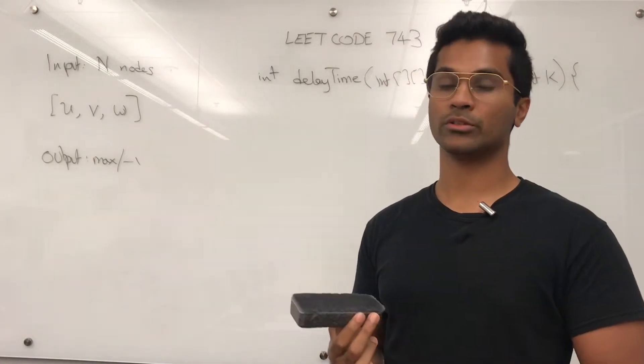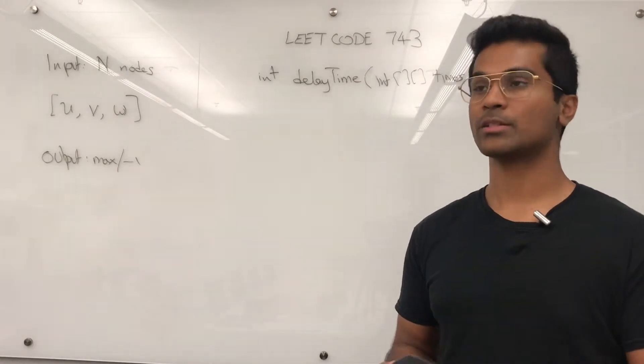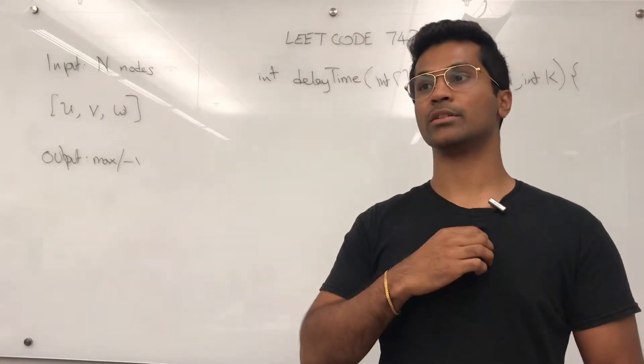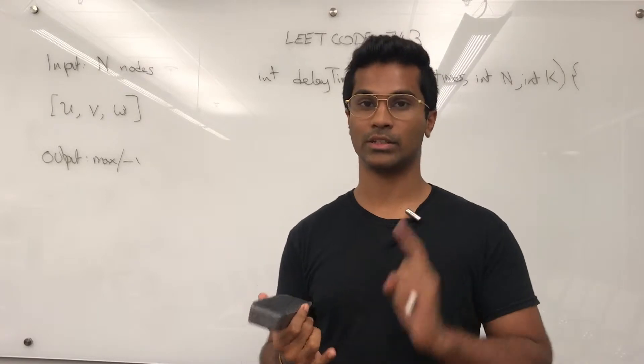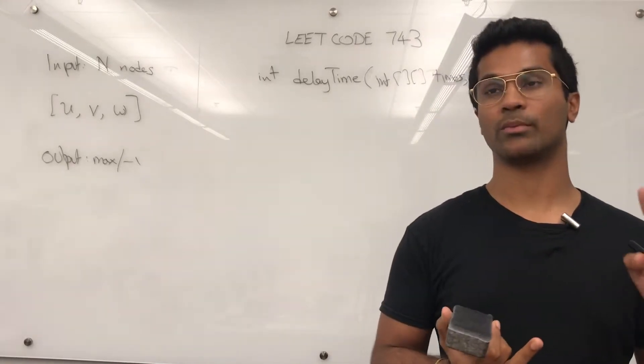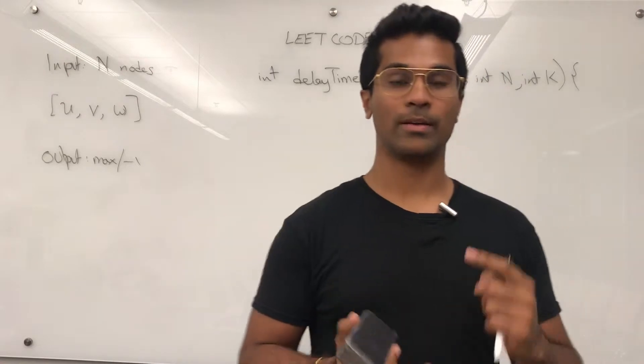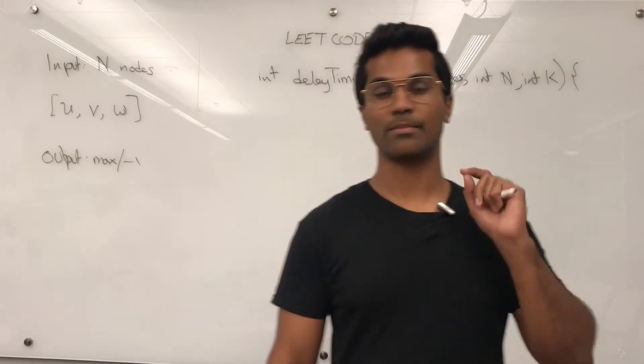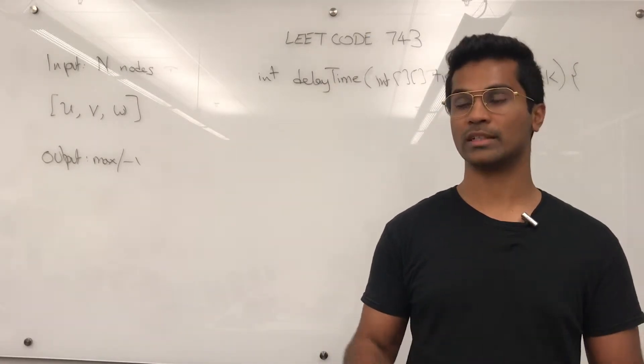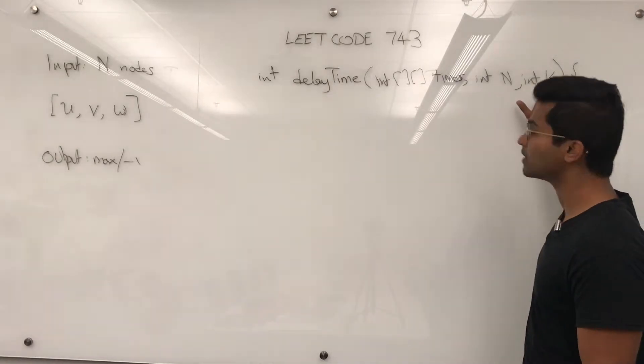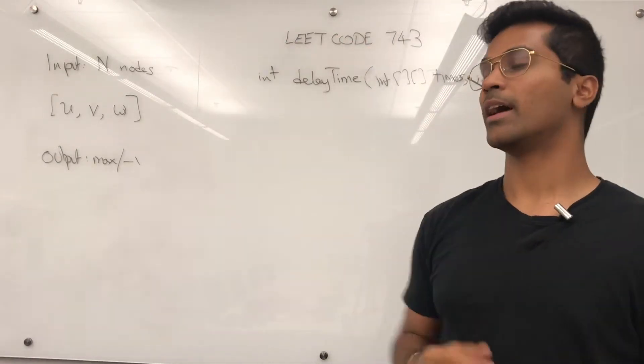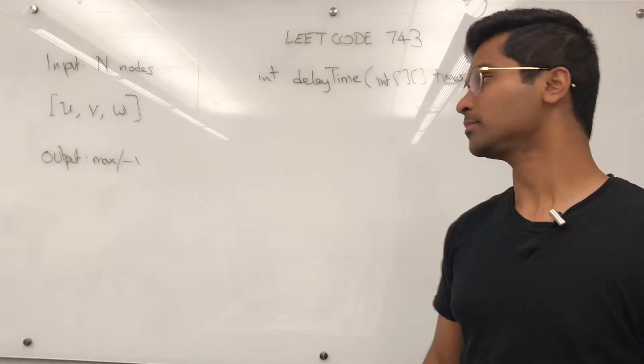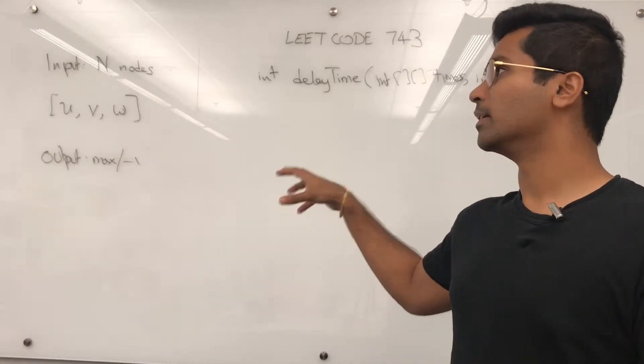So this is a Dijkstra solution and the solution comes from the LeetCode solution tab itself and it's one of the cleanest implementations of Dijkstra I've seen. So there's going to be three things that we need to do. First, we have to create a map which is going to serve as an adjacency matrix. Second, we're going to have to make use of a priority queue because that's how the Dijkstra algorithm is implemented. And then the last thing we're going to make use of is a map of int, int which stores the distance between the given node k to all the other nodes and what we return is the maximum in the value set of that. So, let's get into it.